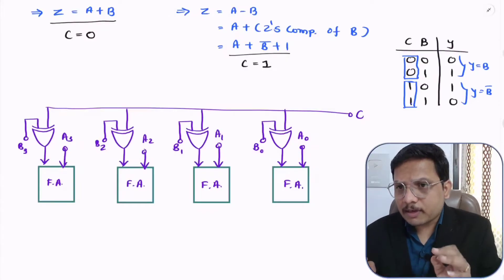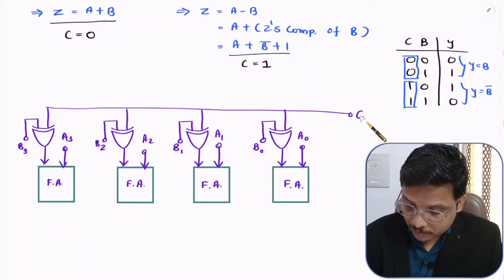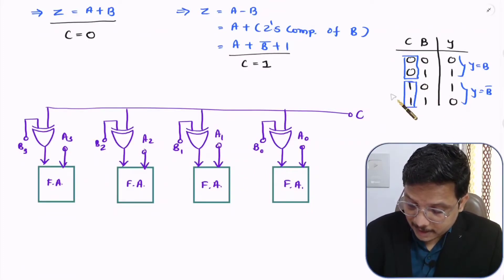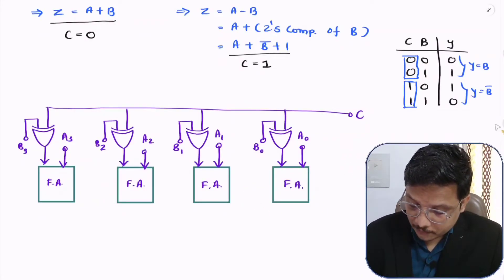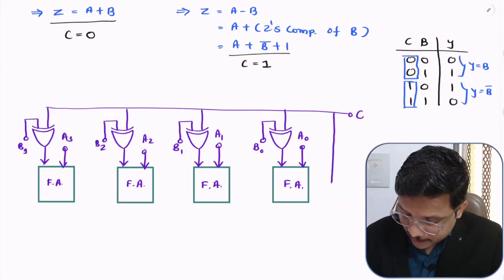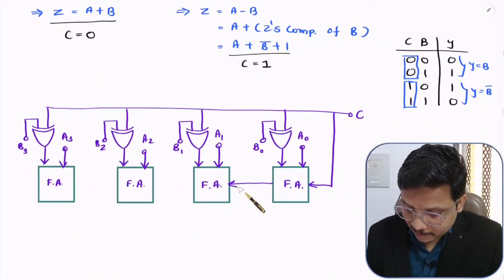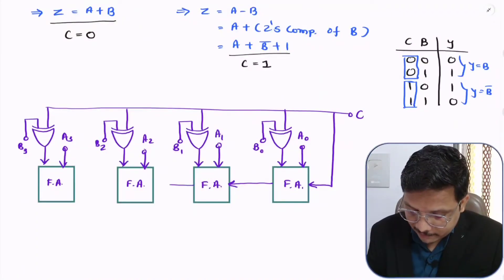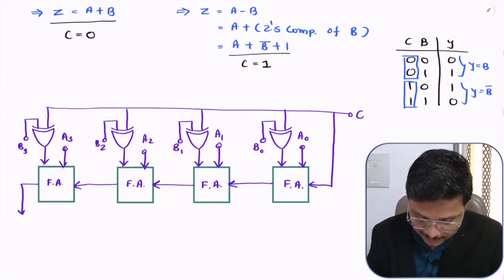This is the property we will be using here. When C is 0, B will be the input to the full adder. But when C is 1, B-bar will be the input to the full adder. These are the full adders we are having, and C will also be the carry input to the first full adder. Whatever carry is generated by each full adder is passed to the next one. This is my final carry out, and my outputs are Z0, Z1, Z2, and Z3.